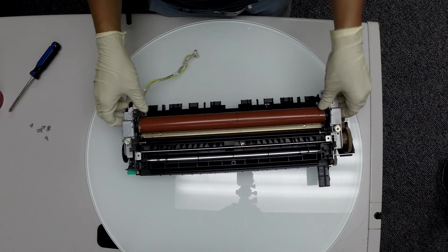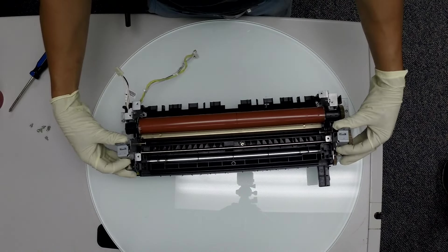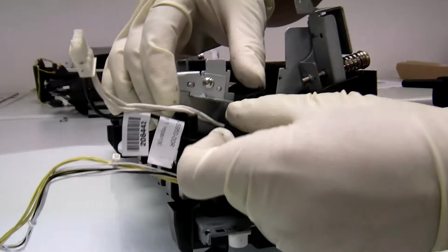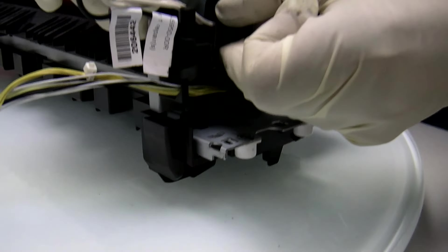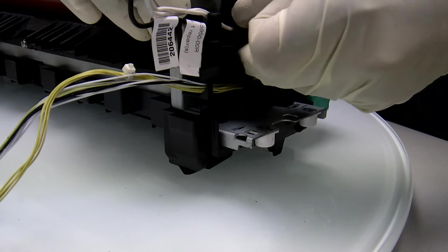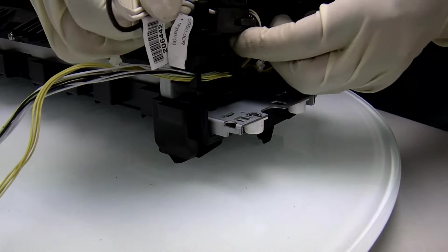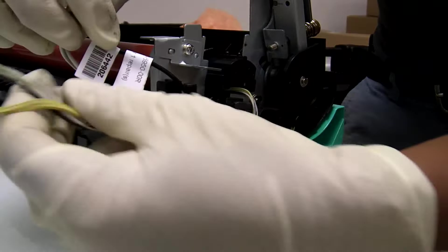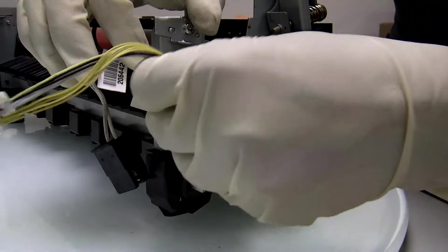Lift up the pressure release bracket. Now let's disconnect the fixing film assembly before removing it. There is a black connector that needs to be unplugged and then run all the wires to the middle of the fuser unit. Turn the fuser unit to the other side to disconnect the rest of the harness.